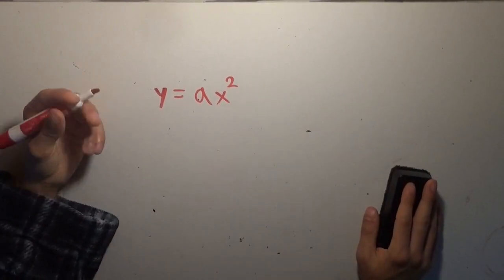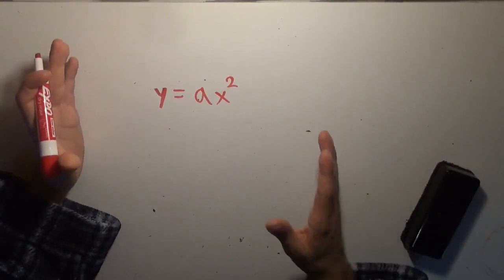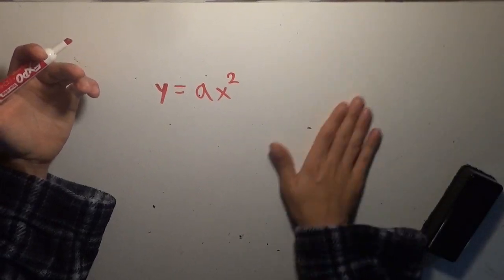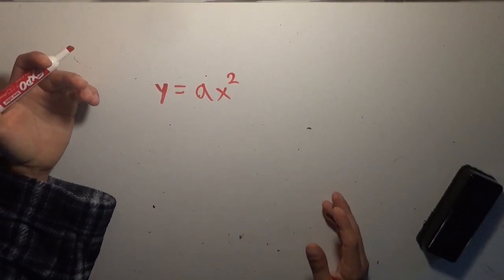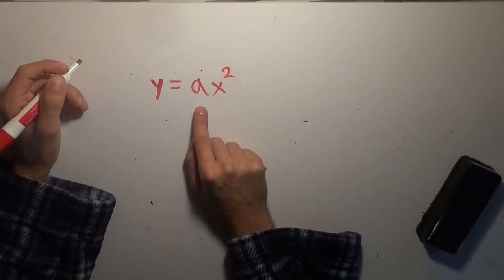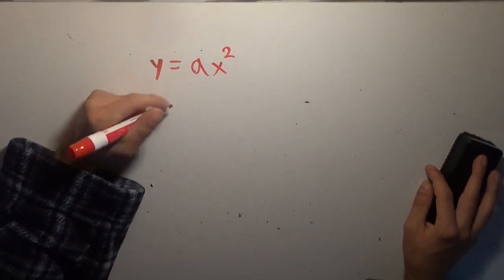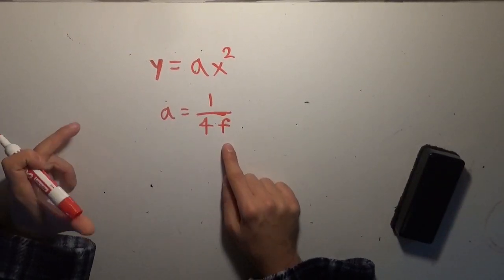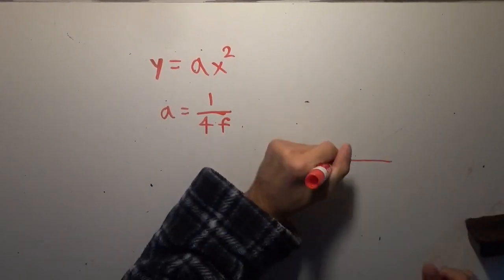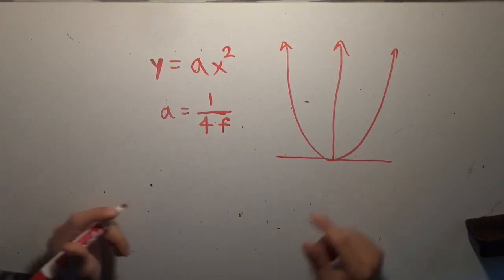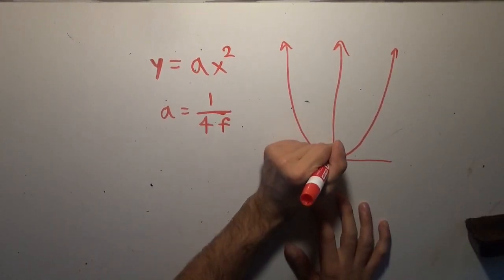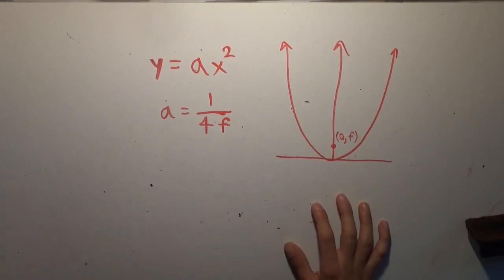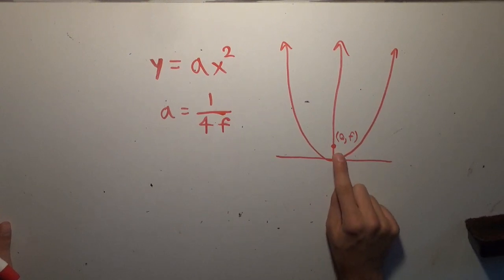So, without loss of generality, we can take any parabola in the plane and move it so that its vertex is on the origin and it's opening up, without changing its shape. That deals with all the b and c problems, and the shape is simply determined by a. Another thing is that a can also be written as 1 over 4f, where f is the y-coordinate of the focus of the parabola — so this point is (0, f).